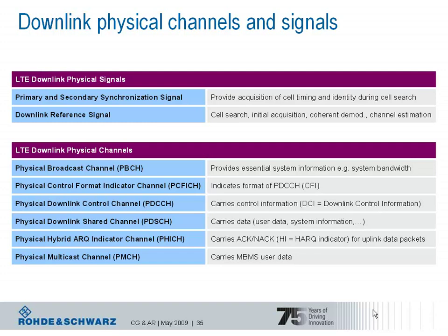The physical channels include, for example, the physical broadcast channel carrying essential system information. Further, there are several control channels such as the physical control format indicator channel and the physical downlink control channel, which inform the UE about scheduling decisions. The physical downlink shared channel is used to transport any kind of data — user data, system information, or paging information.